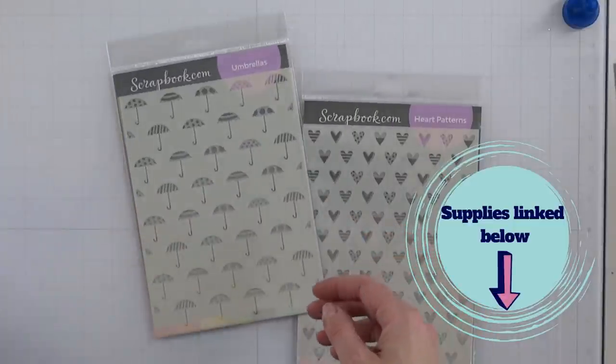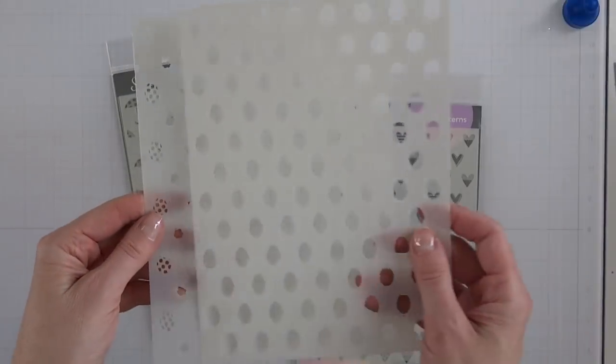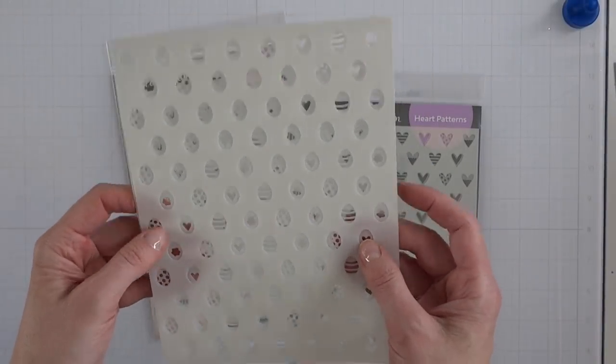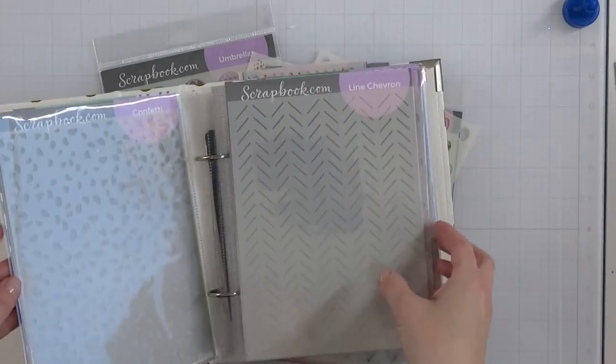Here I'm showing you some double layered stencils, so this is two to a pack. You have the foundational image and then you have an overlay which will give you a pattern.